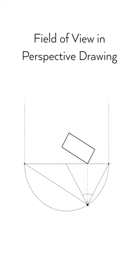Here we have the horizon line again with the two vanishing points. This is the 60-degree angle translated into a cone of vision in perspective. That's where the objects will not be distorted.